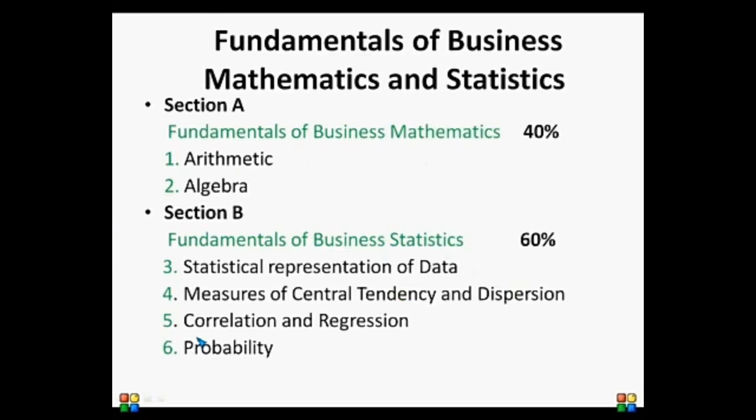This paper has been divided into two sections: Section A - Fundamentals of Business Mathematics, and Section B - Fundamentals of Business Statistics. Section A has the weightage of 40 marks and Section B has weightage of 60 marks, that is 40% and 60% respectively.